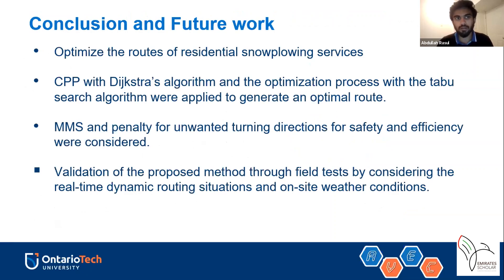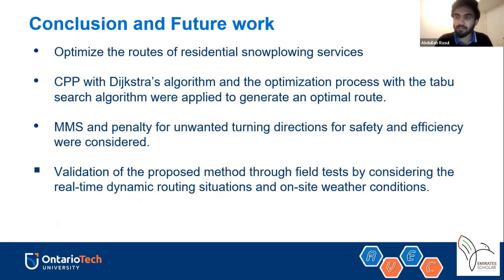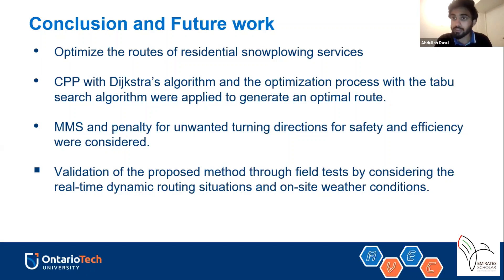To conclude, this paper optimized routes for residential snowplowing services for the city of Clarington. We used the Chinese Postman Problem with Dijkstra's algorithm and Taboo Search optimization to generate an optimal path, and applied the MMS while penalizing undesirable turning directions for efficient routing. Future work includes validation of the proposed method through field tests under actual and dynamic road conditions such as real snowfall events and varying traffic conditions.